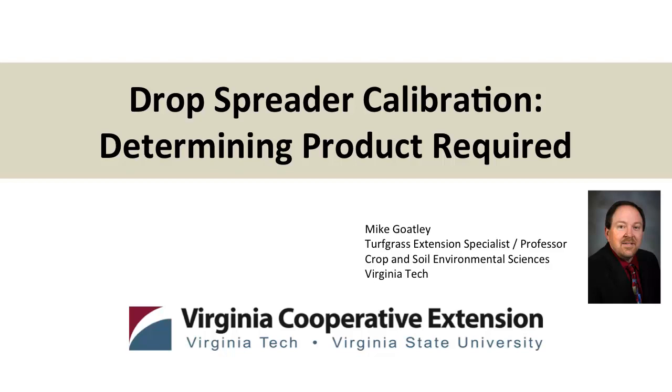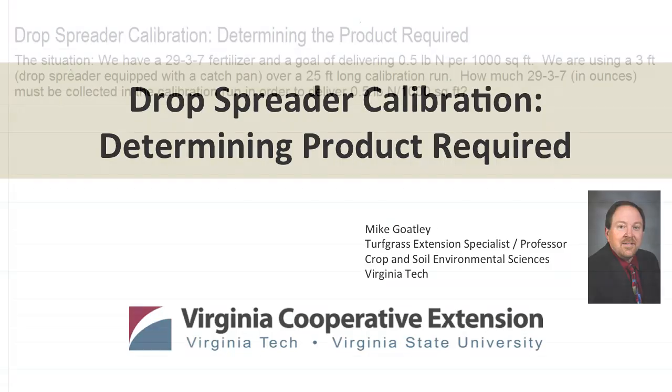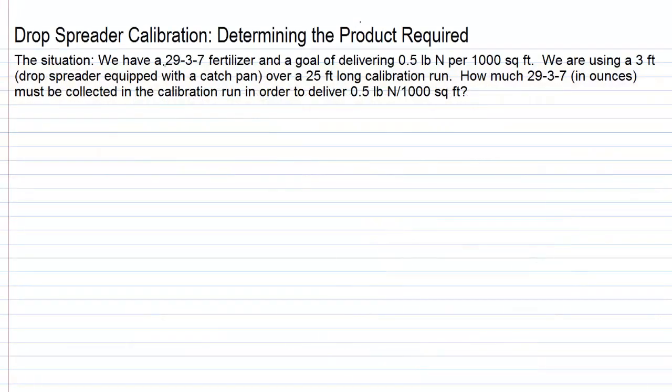Drop Spreader Calibration: Determining the product required. In this situation, we have a 29-3-7 fertilizer, and we have a goal of delivering a half pound of nitrogen per 1,000 square feet using that 29-3-7.